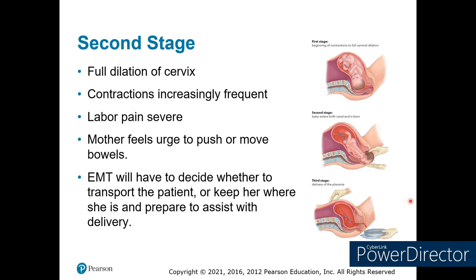The second stage of labor occurs when the cervix is fully dilated. Contractions increase in frequency and severity. Mom will feel the urge to push because the birth canal is directly in contact with the upper side of the rectum — she'll feel pressure and have the urge for a bowel movement. Do everything you can to keep the mom from going to the restroom without your assistance. You do not want to be delivering a baby from a toilet.